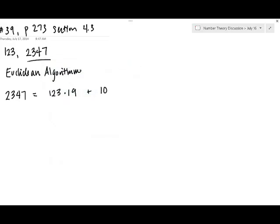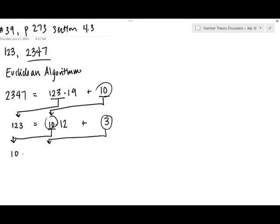Divisor becomes dividend, and remainder becomes divisor. So 123 is going to become our new dividend, and 10 is going to become our new divisor. This one's not so bad. 10 goes into 123 twelve times with a remainder of 3. And now, again, divisor becomes dividend. Make sure you're putting these in appropriate order. You want to grab that divisor of 10, and remainder becomes divisor.